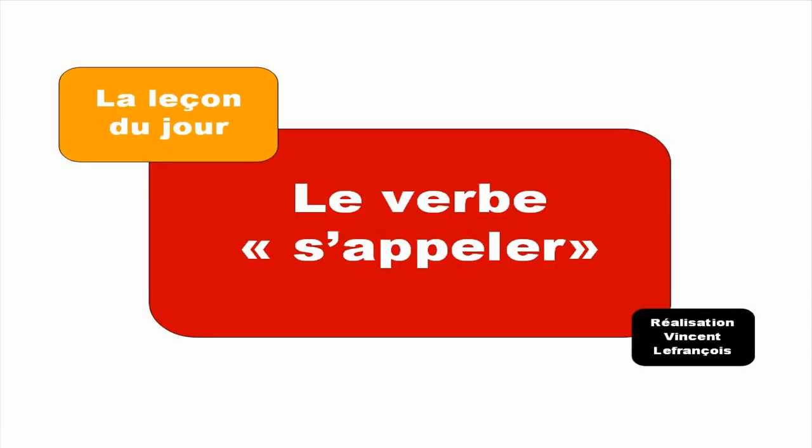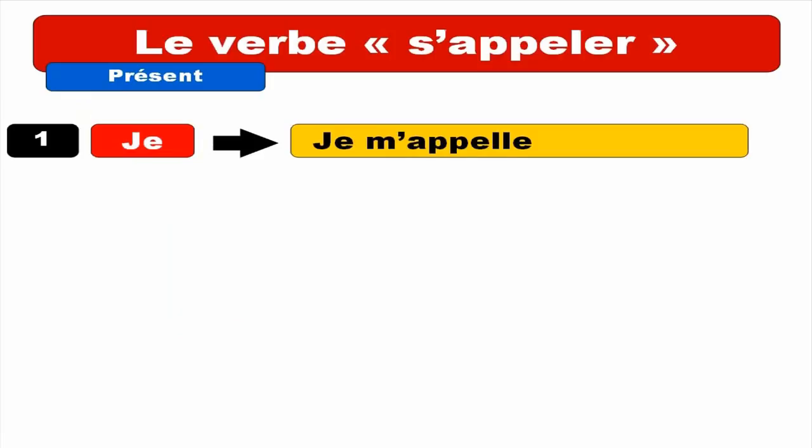First form for JE — it's JE M'APPELLE. That's the particularity of these verbs: you've got to add something. Usually for the first form it's ME, but as the verb APPELER starts with a vowel, the A disappears and you get JE M'APPELLE. Repeat.